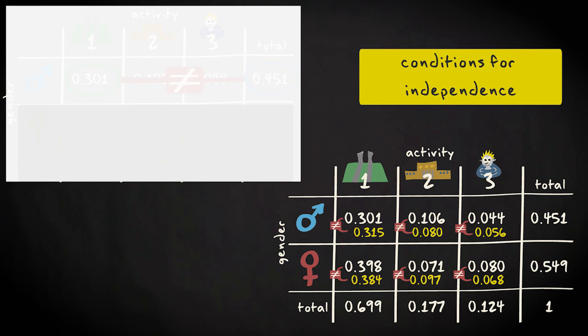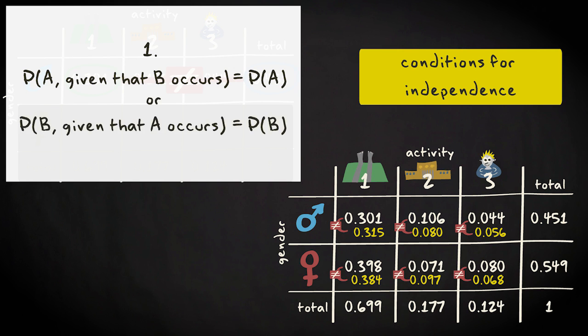The first is, events A and B are independent if the probability of event A given any outcome of event B is equal to the marginal probability of A. And in this definition, you could switch the labels A and B.